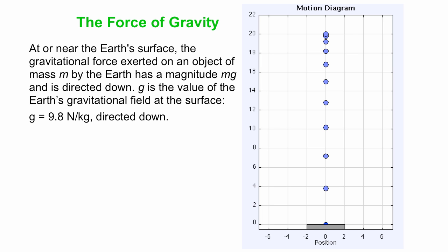What is g? Well, g is the value of the earth's gravitational field at the surface. We often call that the acceleration due to gravity, but really a better name for it is the earth's gravitational field.